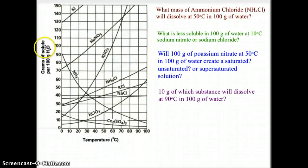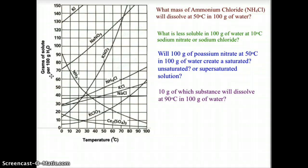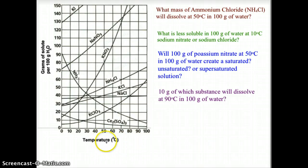Here we have your typical chart of solubility curves. On the y-axis we are measuring grams of solute in 100 grams of water, so this chart always represents dissolving the solute in a 100 gram sample of water. On the x-axis at the bottom we have the temperature scale in degrees Celsius.